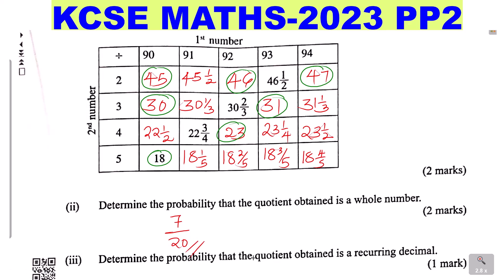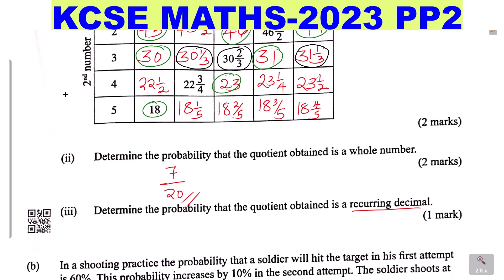Part 3: Determine the probability that the quotient obtained is a recurring decimal. Let us identify the recurring decimals. The first recurring decimal is 30 and a third. Then there is 30 and 2 thirds. Then 31 and a third. Those are the only recurring decimals — there are 3. So therefore the probability is 3 out of the total outcomes, which is 20.